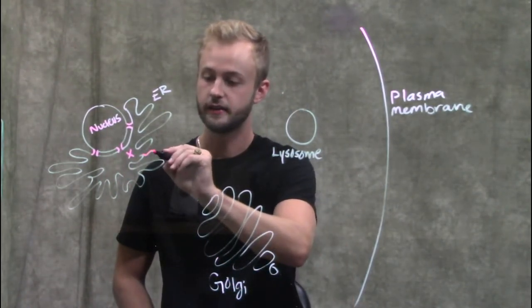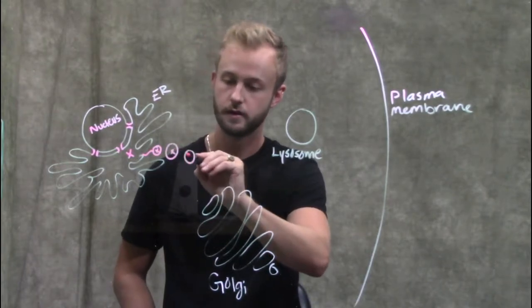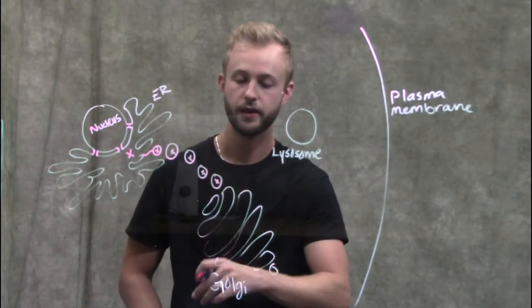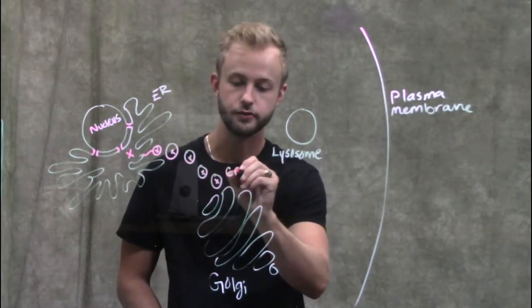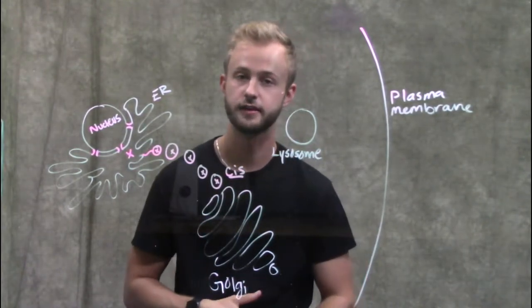Then this protein will break off inside of a vesicle, and that vesicle will then travel to the Golgi body. Specifically it's going to go to the cis face of the Golgi body, which would be this face right here closest to the endoplasmic reticulum.